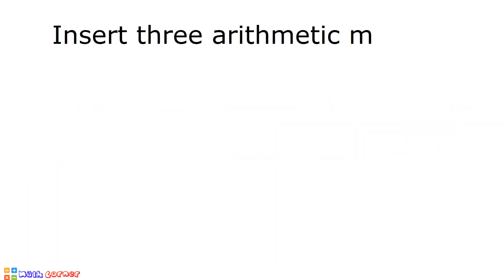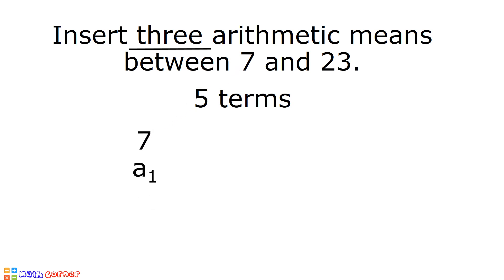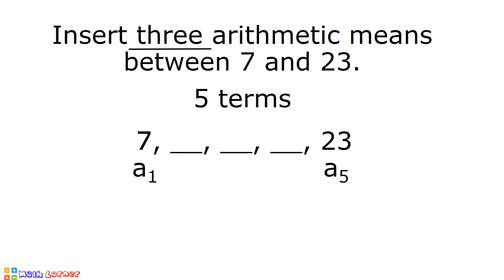Example: let us insert three arithmetic means between 7 and 23. There are five terms in this example because we are asked to insert three arithmetic means, or three missing terms, between two numbers. Let us consider 7 as our a1 or first term, then write three missing terms after that, and 23 as our fifth term or a5. Let us now solve for a2, a3, and a4.